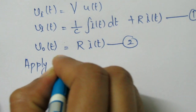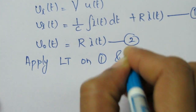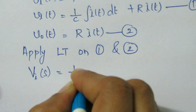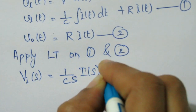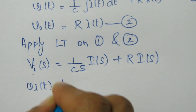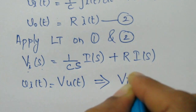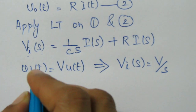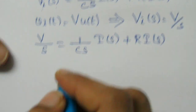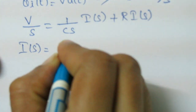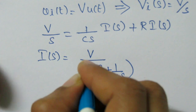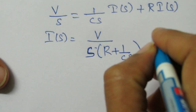Apply Laplace transform on both equations 1 and 2. Therefore V_i(s) = (1/C)·(1/s)·I(s) + R·I(s). Since V_i(t) = V·U(t), the Laplace transform gives V_i(s) = V/s. Therefore V/s = (1/C)·I(s)/s + R·I(s). From this, I(s) can be written as V/s divided by (R + 1/(Cs)). This is equation 3.